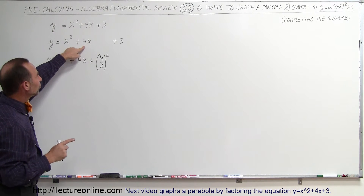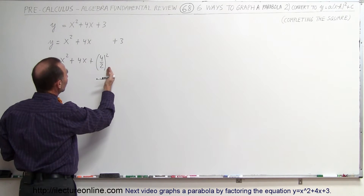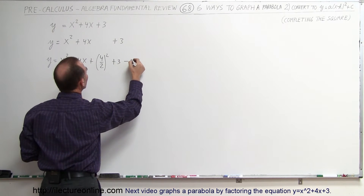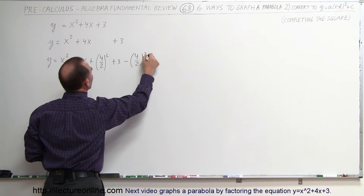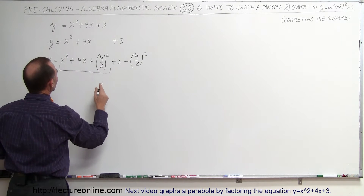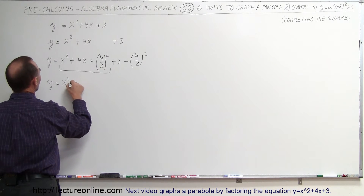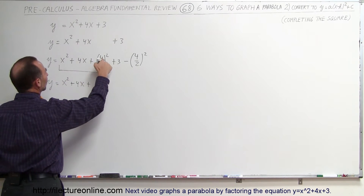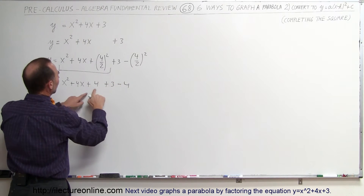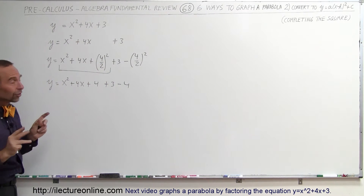Again, you take the coefficient of the middle term, take half of that and square it. Of course, since we add that to the right side, we also have to subtract it from the right side. So that's plus 3 minus the quantity 4 over 2, squared. Simplifying: y equals x squared plus 4x plus 4, so that's plus 3 minus 4. Notice the plus 4 and minus 4 cancel, giving you back the same original equation — so things are exactly the same.